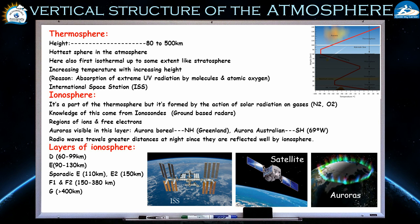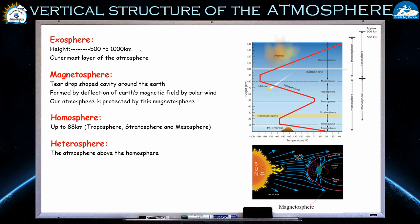Radio waves, like the FM waves we listen to daily, get better signal at night because at night the ionosphere reflects them well. During the day, sunlight interference reduces that reflection. Scientists have also divided the ionosphere into different layers: D, E, E2, F1, F2, and Z layers, though we won't go into detail about each one here.